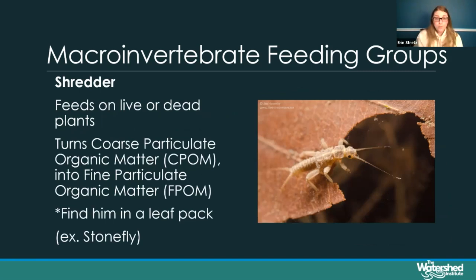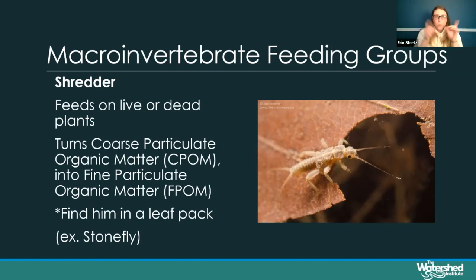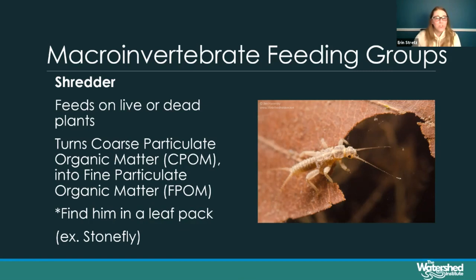Shredders are organisms with mouth parts adapted for taking larger bits of organic material like leaves and breaking them down into fine particulate organic matter. Here we have a stonefly nymph making headway on a leaf, just munching. You can find a lot of these in leaf pack areas where there are tons of leaves in the stream.